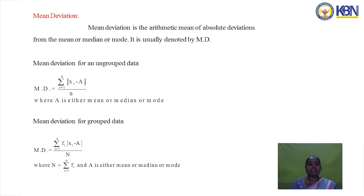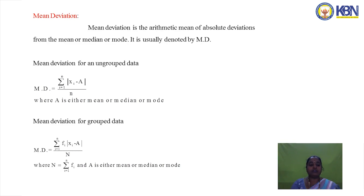The third method is mean deviation. Mean deviation is the arithmetic mean of absolute deviations from the mean, median, or mode, and is usually denoted by MD. For ungrouped data, mean deviation = Σ|xi − A| / n, where n is the sample size and A is either the mean, median, or mode.